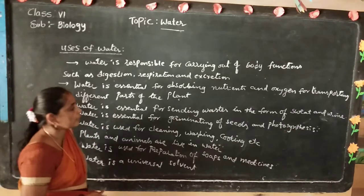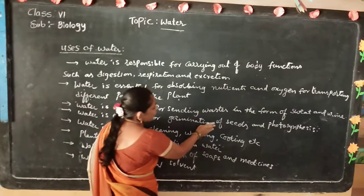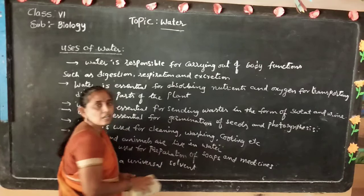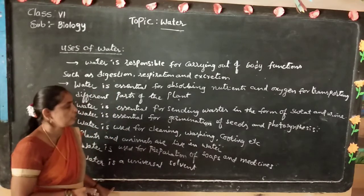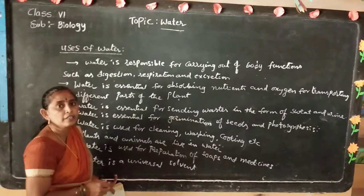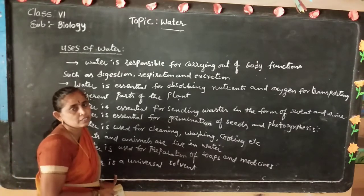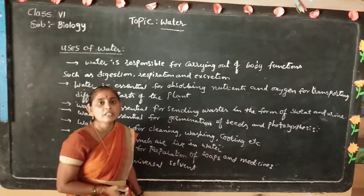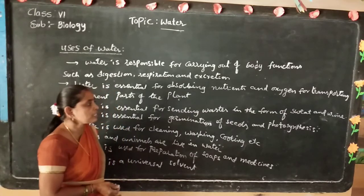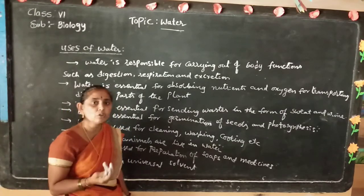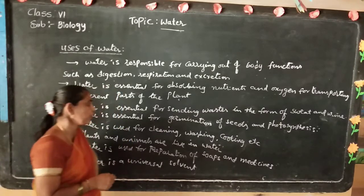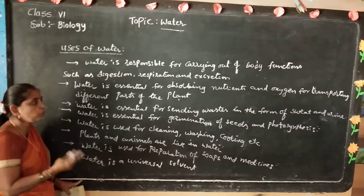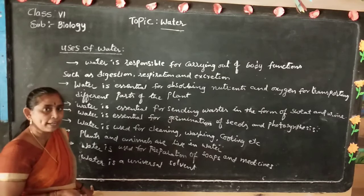Water is essential for germination of seeds and photosynthesis. Without water seeds cannot develop. Water is very important for germination of seeds. Photosynthesis means preparation of food materials — solar energy is converted into chemical energy. Without water plants cannot prepare food materials. The food prepared is starch or carbohydrate, which is stored in different parts of the plant.